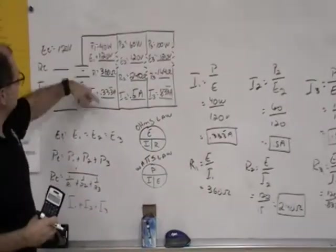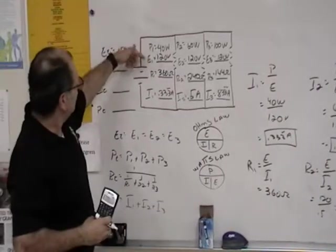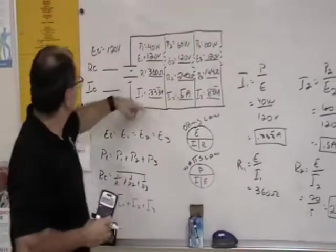So we have all the values now. We have our voltage, resistance, and current for each one of these.